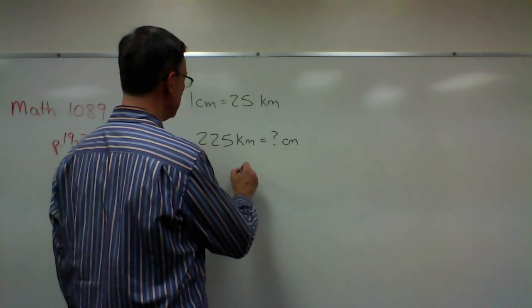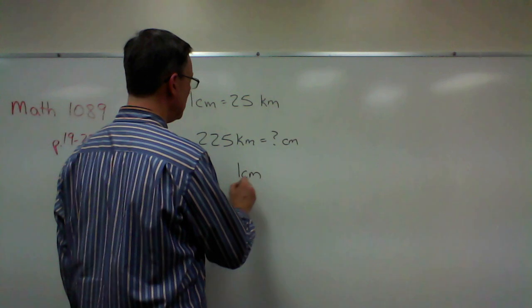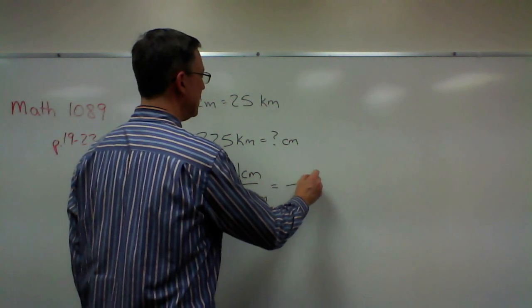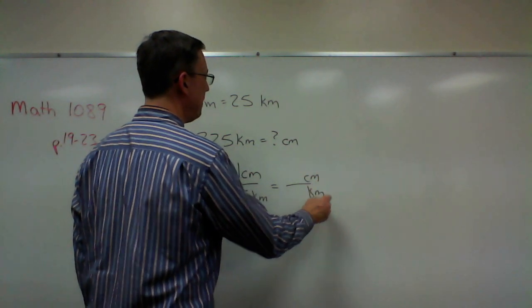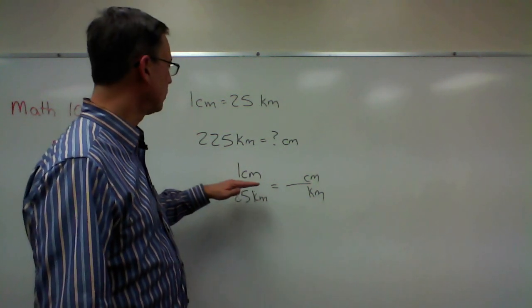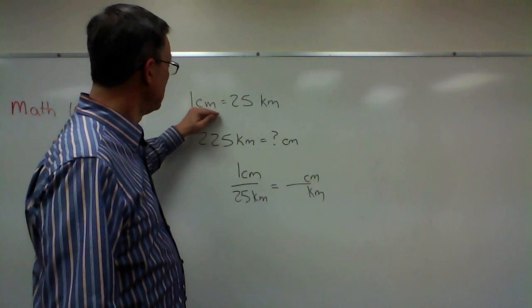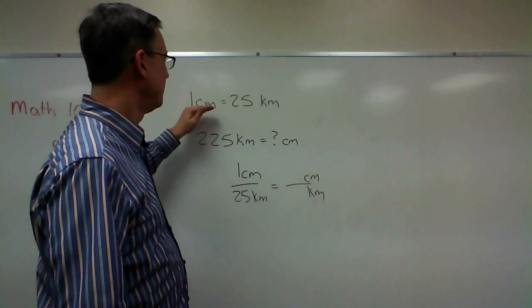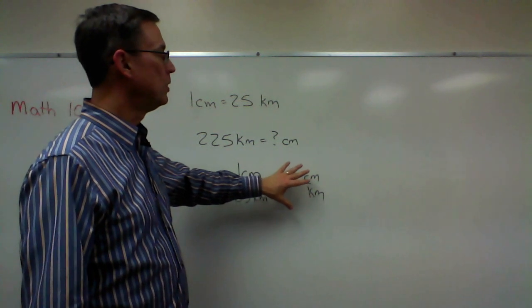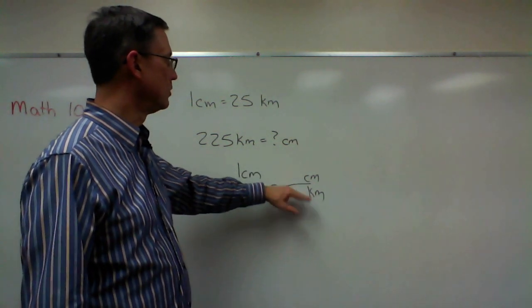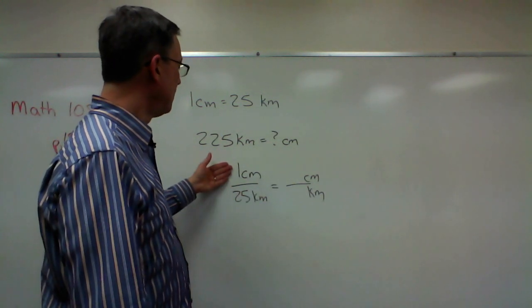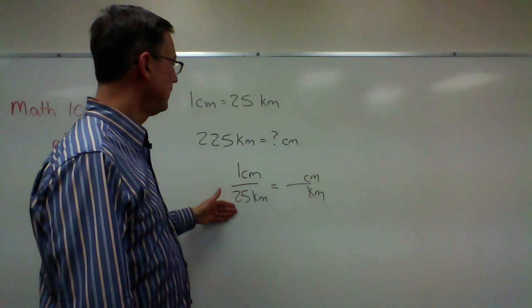So we're going to set up the scale first and put centimeters over kilometers equals centimeters over kilometers. And that's a very important point. If you were a little confused on that in the first section, let's make that crystal clear here. It doesn't matter which one we do on top, but let's say we do centimeters over kilometers. Then when we do the second fraction, we have to do it in the same way. So centimeters over kilometers, we can't put kilometers on the top and centimeters on the bottom. That won't work.